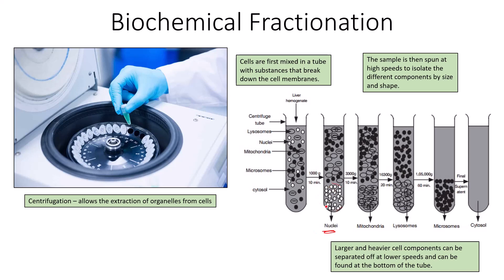Larger and heavier cell components separate at lower speeds and settle at the bottom of the tube. Spinning first at a low speed causes the largest, heaviest, and most dense cellular structure — the nuclei — to settle out first, forming a pellet at the bottom. Removing those and spinning slightly faster yields the next biggest: mitochondria. Spinning faster still yields lysosomes, then microsomes. What remains is the cytosol — the aqueous solution found in the cytoplasm.